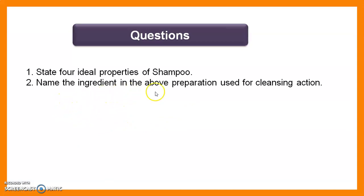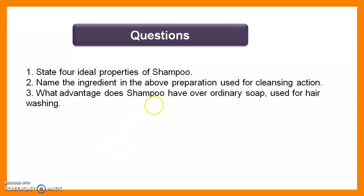Question 2: Name the ingredient in the above preparation used as a cleansing agent. In the above preparation, sodium lauryl sulfate is used as the cleansing agent — it is a surface active agent and foaming and cleansing agent. Question 3: What advantages does shampoo have over ordinary soap used for hair washing? Shampoo has proper foaming, cleansing agents, and conditioning agents that give hair a glossy and bouncy appearance. Soap cannot provide conditioning effects and cannot be used effectively in hard water, whereas shampoo can be used in hard water.